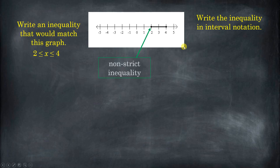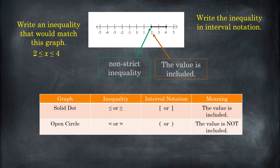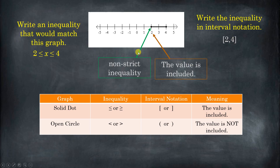Let's go over it. This is a non-strict inequality, which means the value is included. If you have a solid dot, that's the same concept as the inequality symbol less than or equal to or greater than or equal to — and in that situation, we use square brackets. Whereas if it was an open circle, or in an inequality if it was less than or greater than, we'd use parentheses because the value is not included. So the interval notation for this is from 2 to 4 with square brackets.